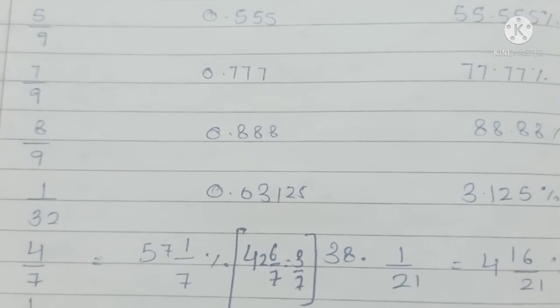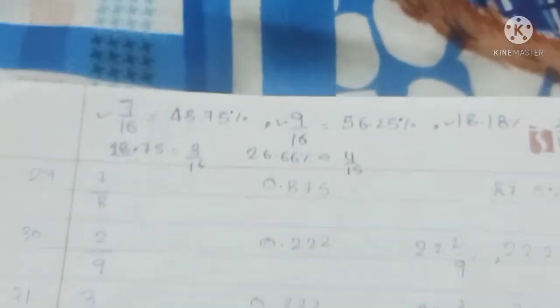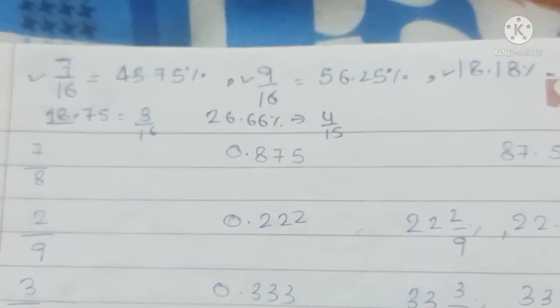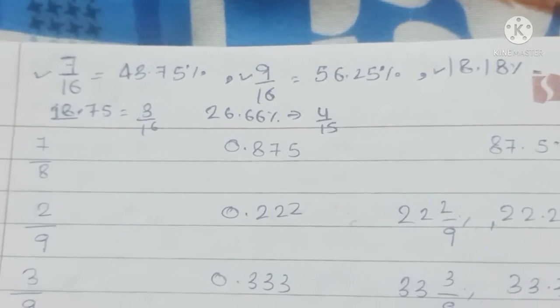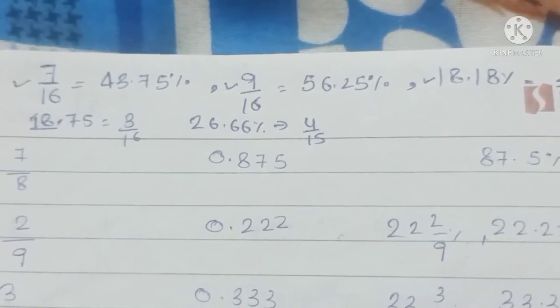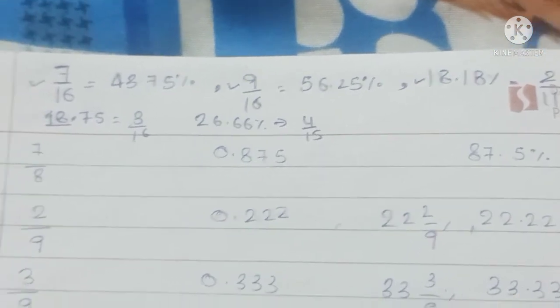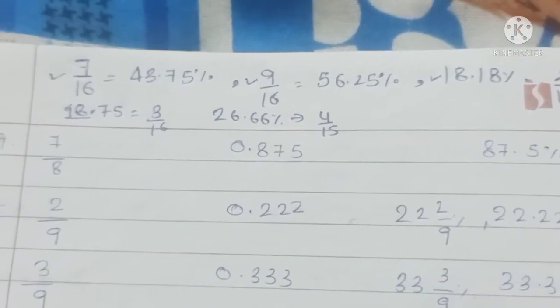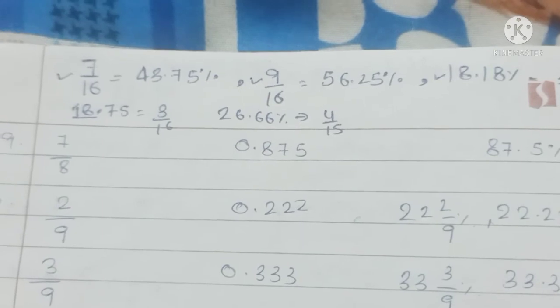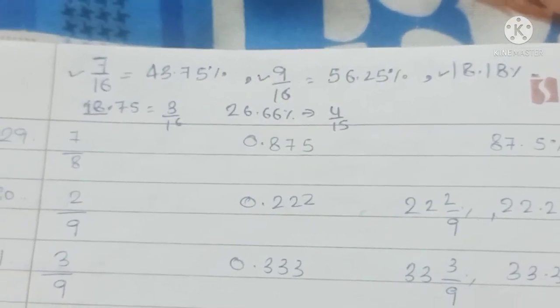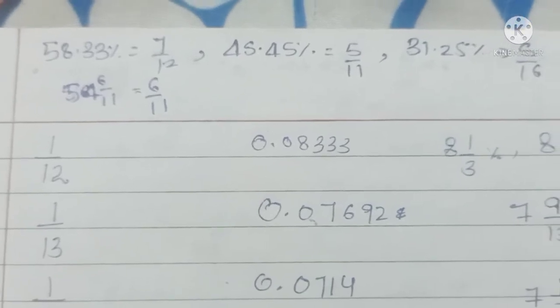7/16 is 43.75%. 9/16 is 56.25%. 18.18% is 2/11. 18.75% is 3/16. 26.66% is 4/15.